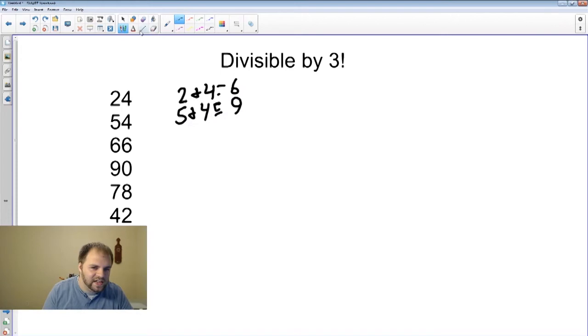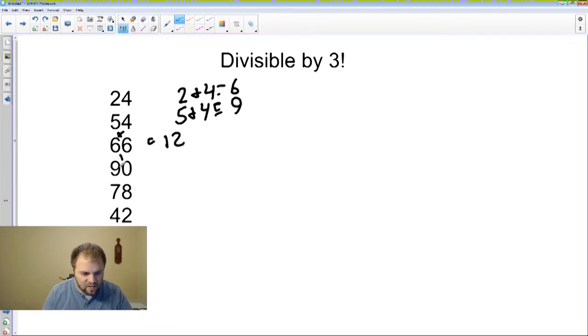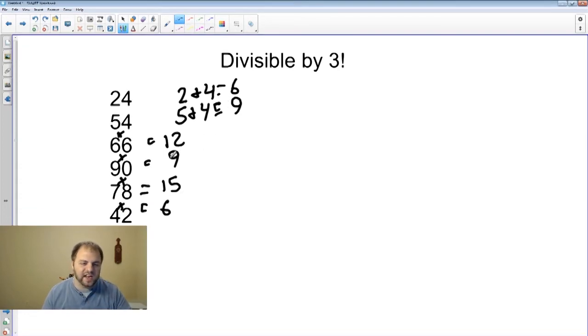Let's see if we keep doing this for the rest of them. Six plus six is 12, nine plus zero equals nine, seven plus eight equals 15, four plus two equals six. Let's stop there for now. Six, nine, twelve, nine, fifteen, six. So far what I'm noticing is that three, if we know our basic multiplication tables, can go into six, nine, twelve, nine, fifteen, six all evenly.